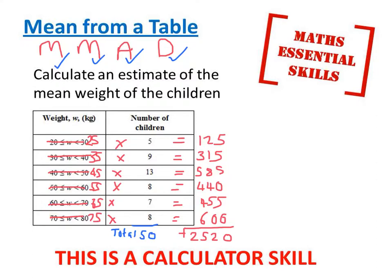To finish off the question, I multiplied using the midpoints, I've added, and now I'll divide. 2520 divided by 50 gives me an answer of 50.4 kilograms. Let's just check that answer is reasonable.